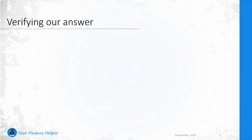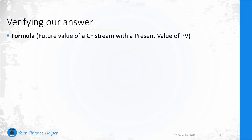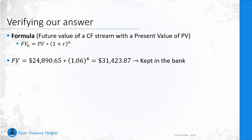We can verify our own answer by looking at the future value of the present value we just calculated. The formula for the future value of a cash flow stream with present value PV is shown right here. This formula is basically the same as the future value formula of a single cash flow — we just swap in the present value sign instead. The present value we just calculated was $24,890.65. If we multiply this by 1.06 to the power of 4, we get $31,423.87. This is the amount your father will get if he deposits the present value amount into the bank and keeps it there for four years.